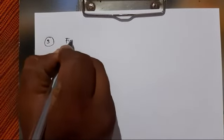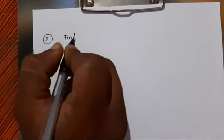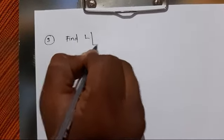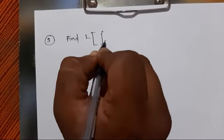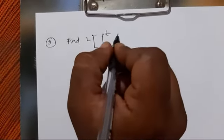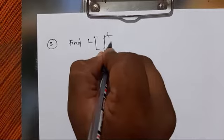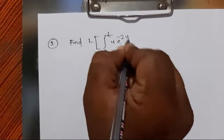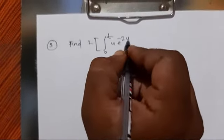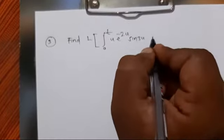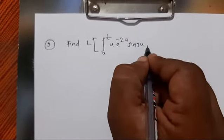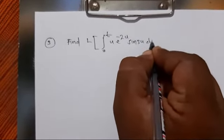Now we will take one more example. Find L{∫₀ᵗ u · e^(-2u) · sin(3u) du}.